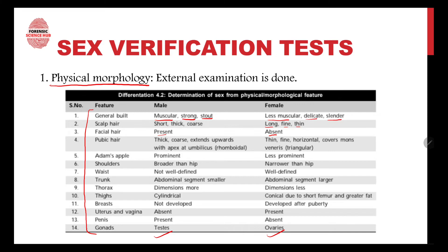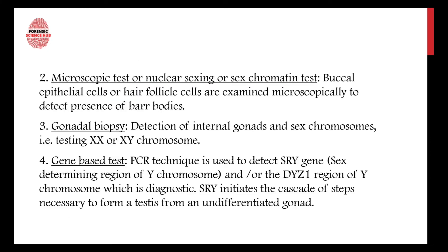The uterus and vagina are not present in males, and the penis is not present in females. The gonad in males is the testes and in females it is the ovary. After examining all these external characteristics, certain microscopic tests or nuclear sexing or sex chromatin tests can be done. For this test, buccal epithelial cells or hair follicle cells are taken and examined microscopically.